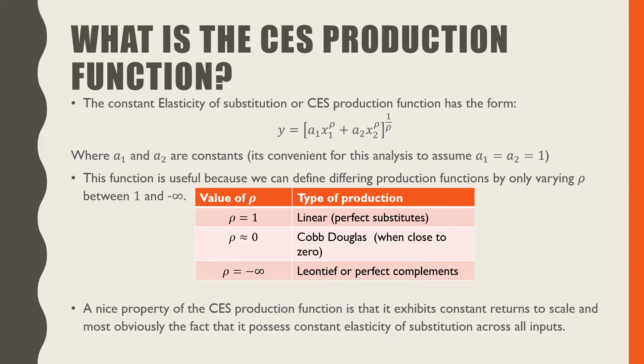What is the CES production function? The constant elasticity of substitution or CES production function has the following form: Y is equal to a1 x1 raised to the power of rho plus a2 x2 raised to the power of rho, having that all raised to 1 over rho.